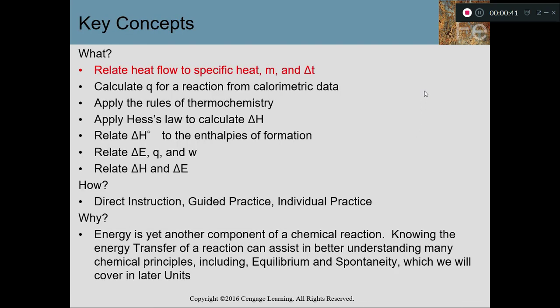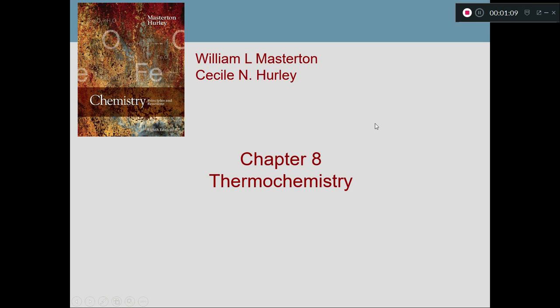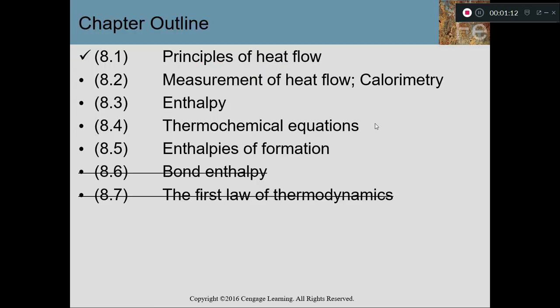We've already talked about heat flow, specific heat, what M is, and delta T. We are now going to focus a lot more on this second bullet item, which is calculating the Q — the heat of release from what is called calorimetric data, where you're talking about seeing what happens to a system and temperature changes to the system. The second section is measurements of heat flow, or calorimetry — a magic word associated with this chapter section.